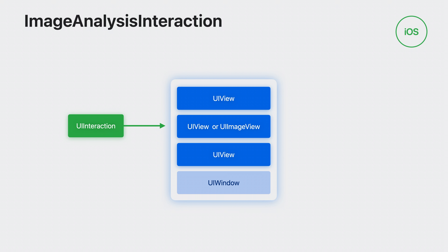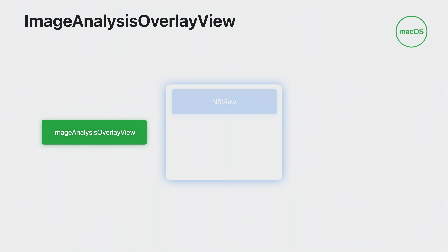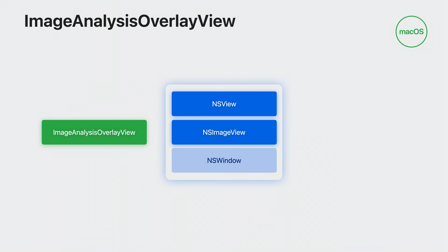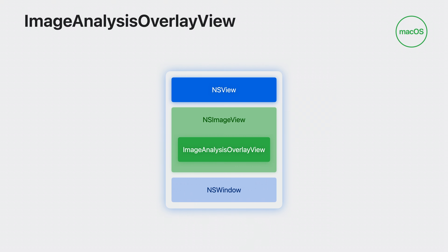For iOS, the image analysis interaction is a UI interaction that is added to a view already existing in your app's view hierarchy. The UI interaction does not exist on the Mac, so what do you do? In this case, as the name suggests, the image analysis overlay view is a subclass of NSView. I simply need to add the overlay view in my view hierarchy above my image content. The simplest way is to add it as a subview of my content view, which makes it easier to manage as you don't have to handle repositioning the overlay view when the content view's position changes.